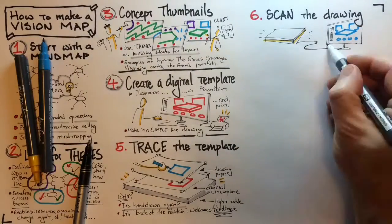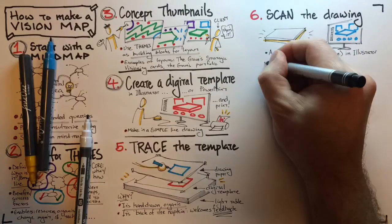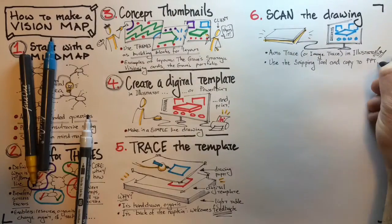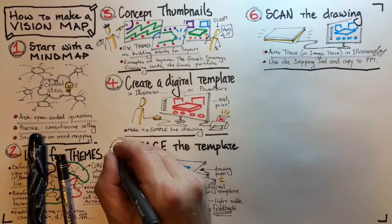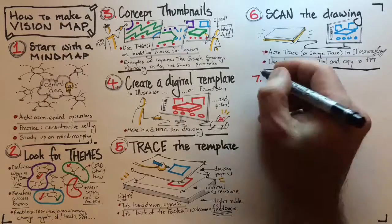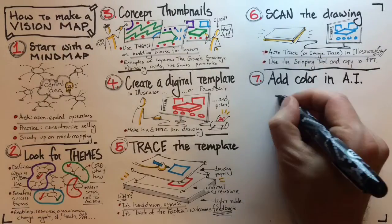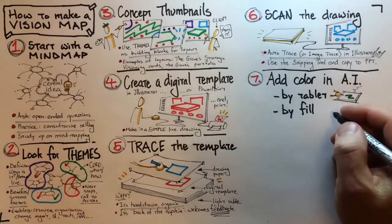Once you've got it in Illustrator, you can add color either by using a tablet or by clicking on the shapes and filling with color. Keep in mind that using a tablet requires talent and practice.